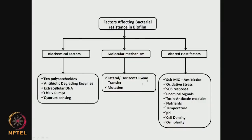Quorum sensing is a signaling molecule produced by bacteria especially when they are in a group. It helps them move from a mobile form into a stationary biofilm-forming form. At the molecular mechanism level, there could be lateral or horizontal gene transfer, or mutations in the microorganisms — all of which can cause resistance in biofilm.